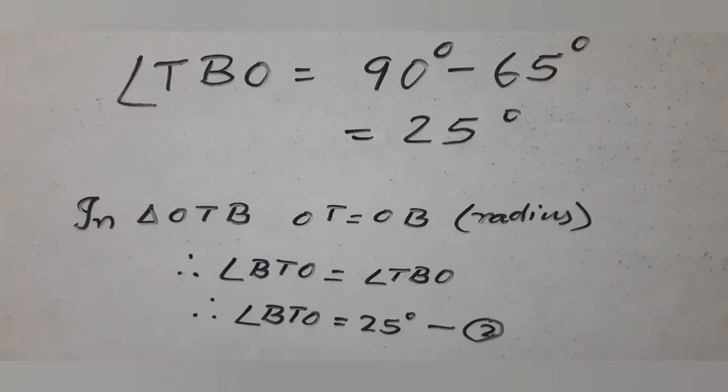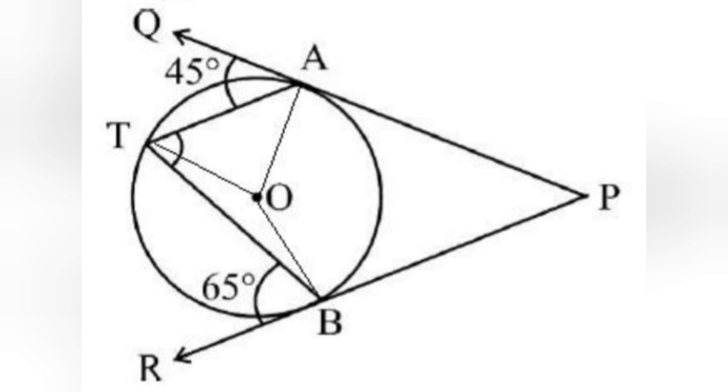Using equations 1 and 2, we see that angle ATB equals 25 degrees plus 45 degrees, which is 70 degrees.